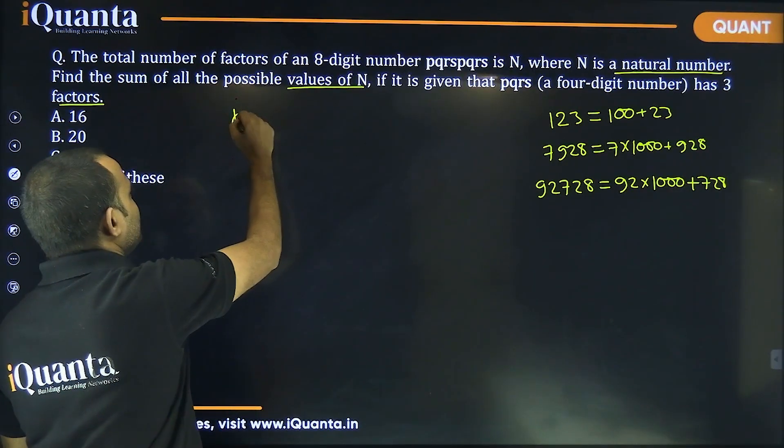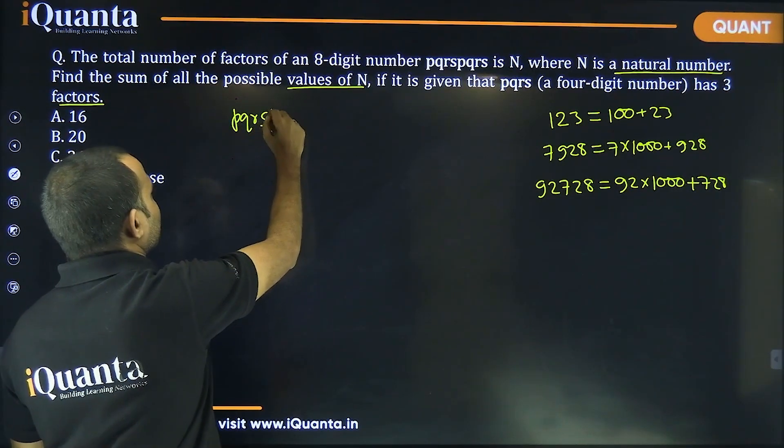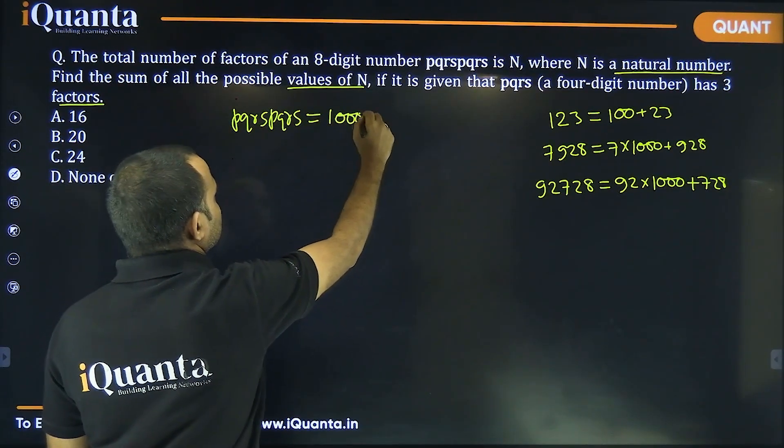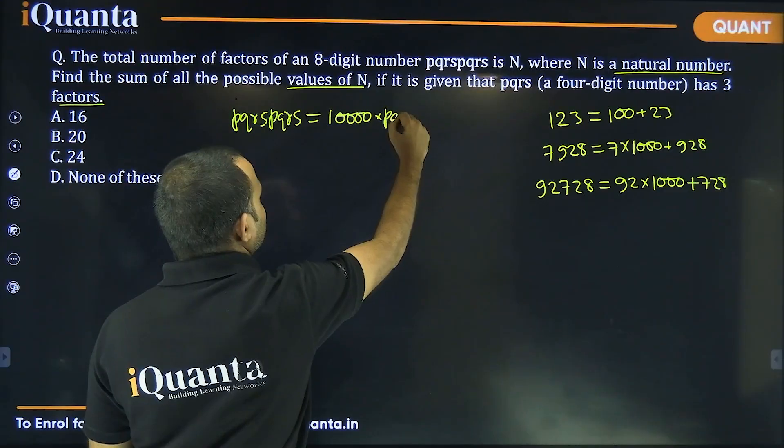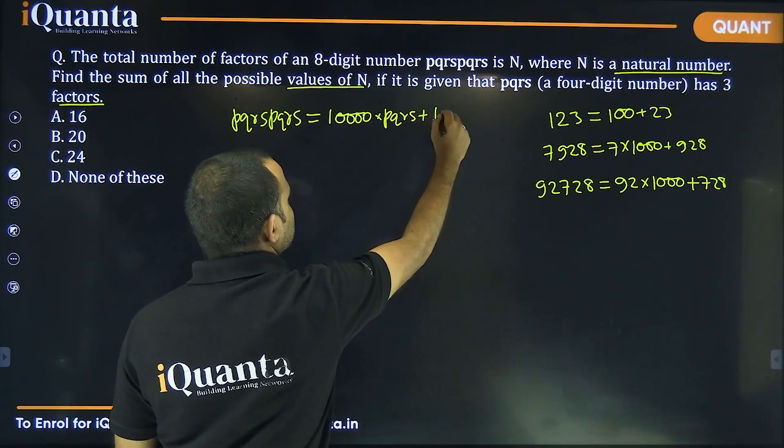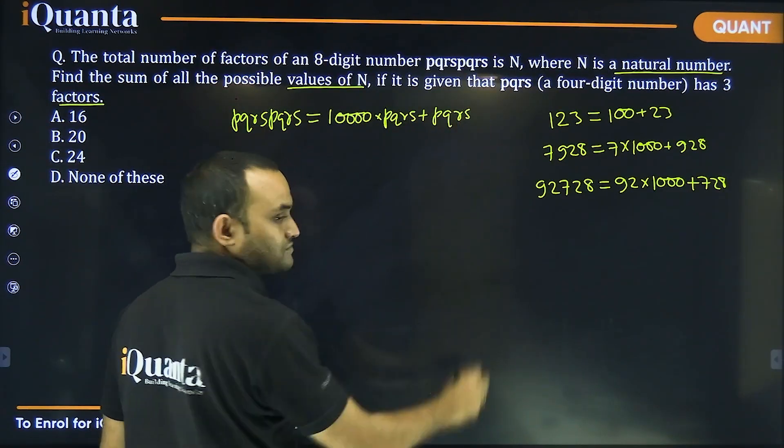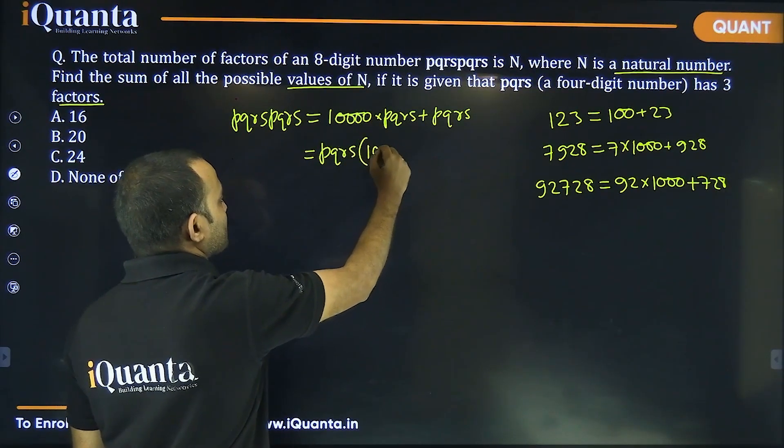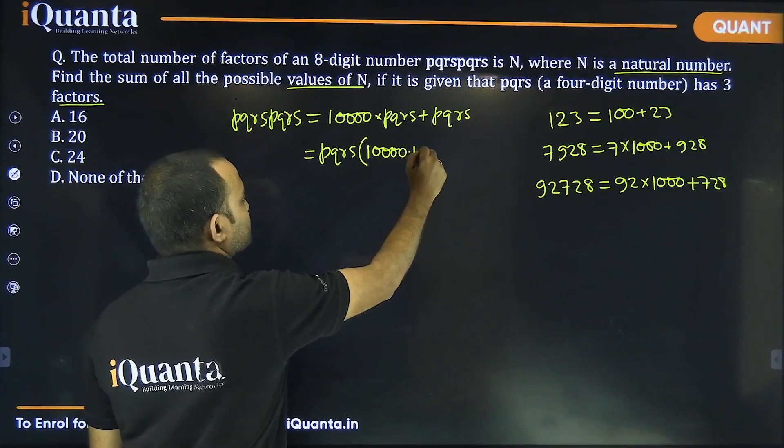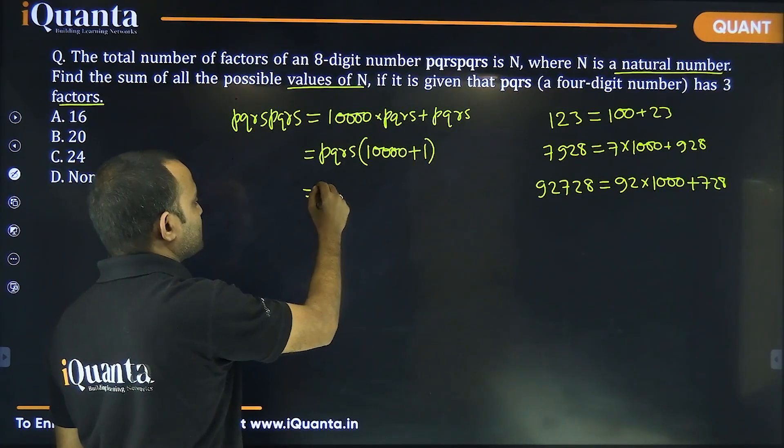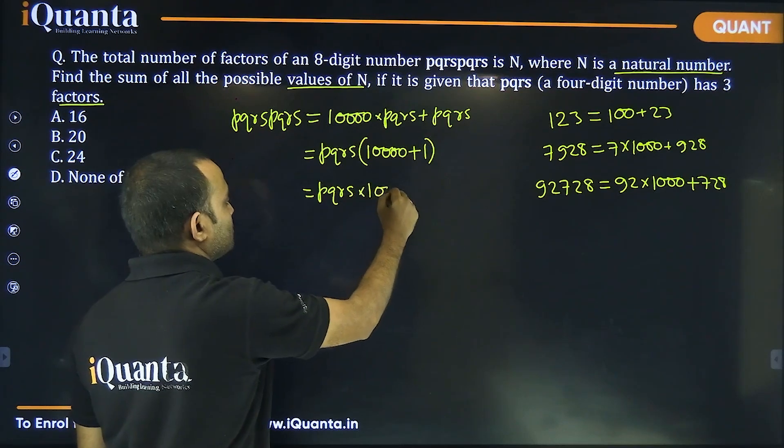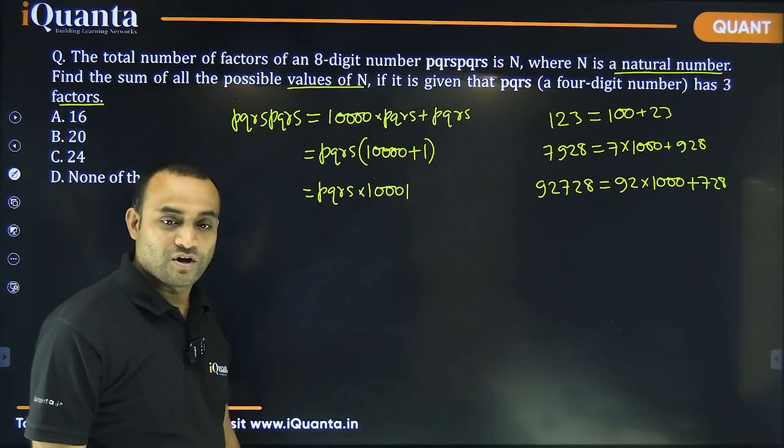can we write PQRSPQRS as 10,000 into PQRS plus PQRS. Then we can take PQRS common and this will become 10,000 plus 1, which is nothing but PQRS into 10001.